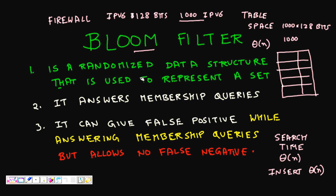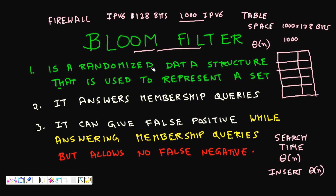When we have space that is of utmost importance, we use Bloom filters for membership queries — for example, a packet is coming and you want to know whether to block it. You check if it is in the set, and if it is, you block it. The question is: do you need such a huge amount of space, or can we do it better? Here comes the Bloom filter.